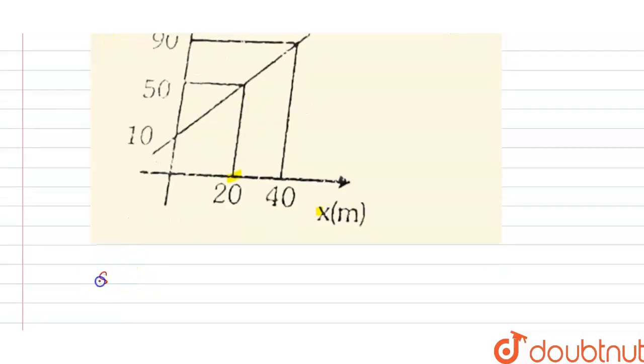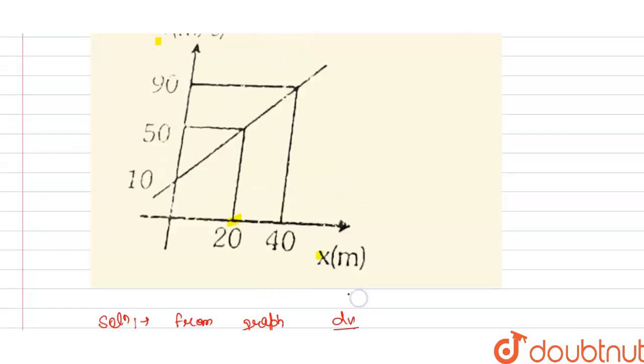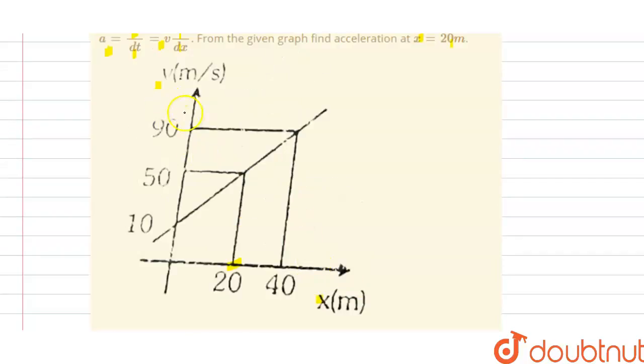So the solution of this question is, from the graph we can write here dv/dx, that is the rate of change of velocity with respect to distance.